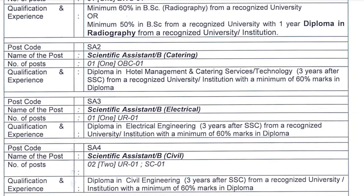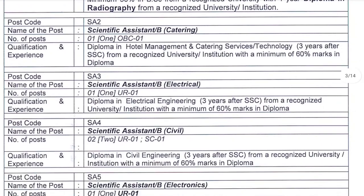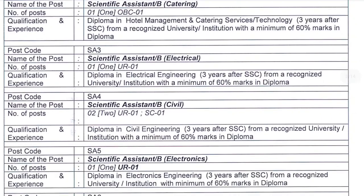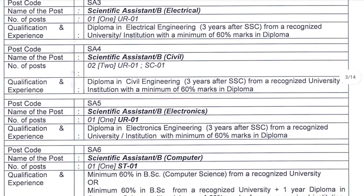Here is the Scientific Assistant B in the Civil category, requiring a Diploma in Civil Engineering. You can also apply for the Electronics department with a Diploma in Electrical Engineering, or for Computer Science with a B.Sc. in Computer Science.